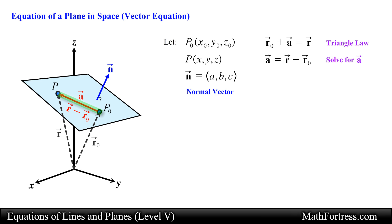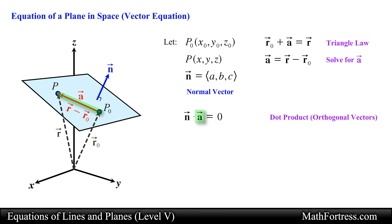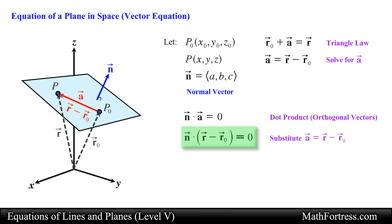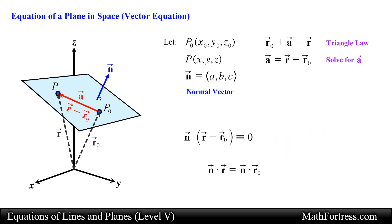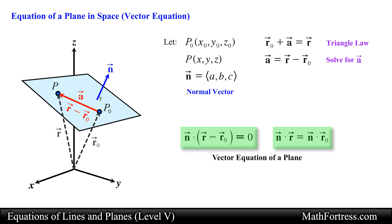Recall from the dot product video series that two orthogonal vectors will have a dot product equal to zero. So we can write that the dot product of vector n and vector a is equal to zero. We then replace vector a with vector r minus vector r0. We can rewrite this by distributing vector n and moving vector n dot vector r0 to the other side of the equal sign. These expressions are referred to as the vector equation of a plane.